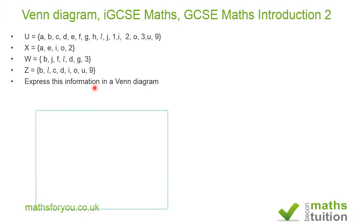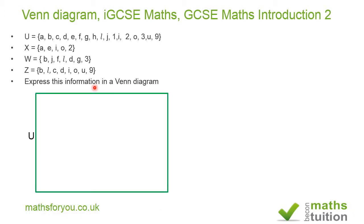First I draw my universal set U as a rectangle. I then examine the elements in X and W — they have nothing in common, so they do not intersect. Comparing sets X and Z, I can see they have I and O in common, so X and Z do intersect. Sets W and Z also share some elements, so they intersect too.